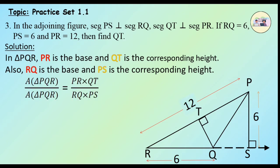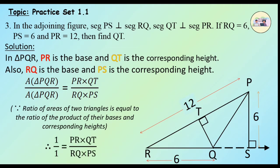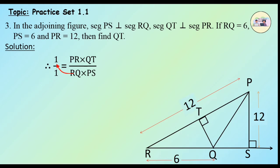If we consider the ratio of triangle PQR to triangle PQR itself, we get: area of triangle PQR upon area of triangle PQR is equal to (PR × QT) upon (RQ × PS), since the ratio of areas of two triangles is equal to the ratio of the product of their bases and corresponding heights. But area of triangle PQR equals area of triangle PQR, therefore 1/1 equals (PR × QT) upon (RQ × PS). Cross-multiplying: PR × QT = RQ × PS.